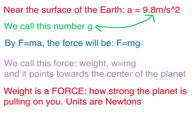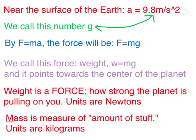Note that weight is a force. It's essentially a measurement of how strong the planet is pulling on you. The units of weight are, in fact, newtons. Mass, on the other hand, is sort of a measurement of the amount of stuff. The units of mass are kilograms in comparison to the weight, which has units newtons.